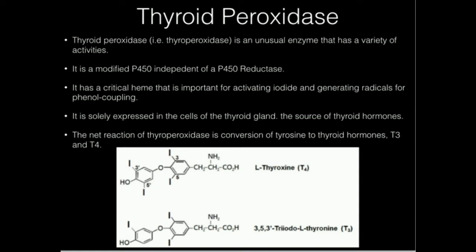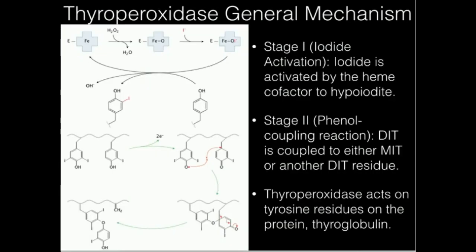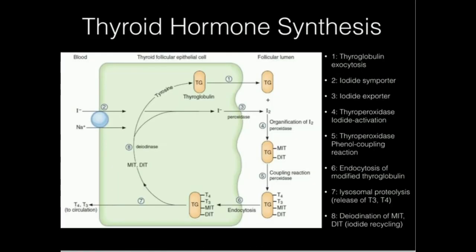The four and three indicate how many iodines are attached to the molecule — T4 has four iodines and T3 has three. We're going to see the synthesis of thyroxine (T4) and T3 both on the biological level and on the chemical level.